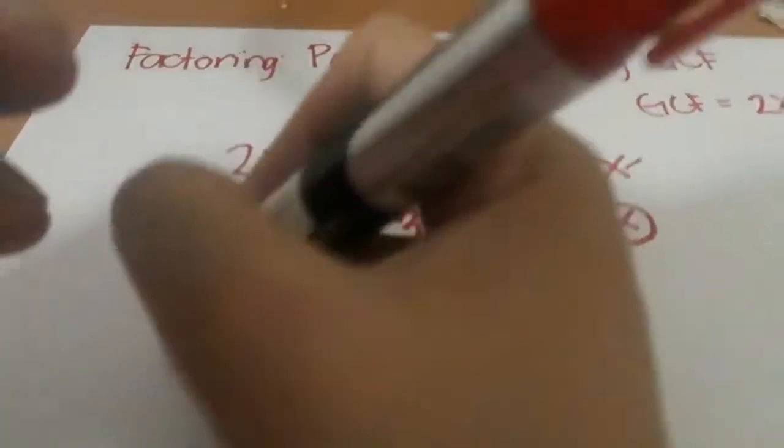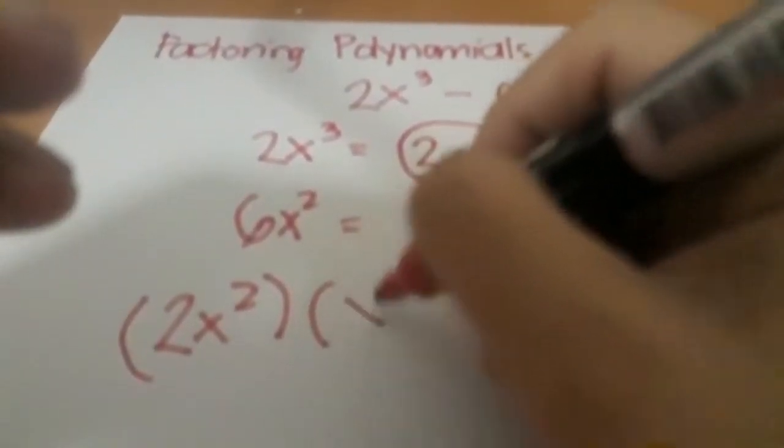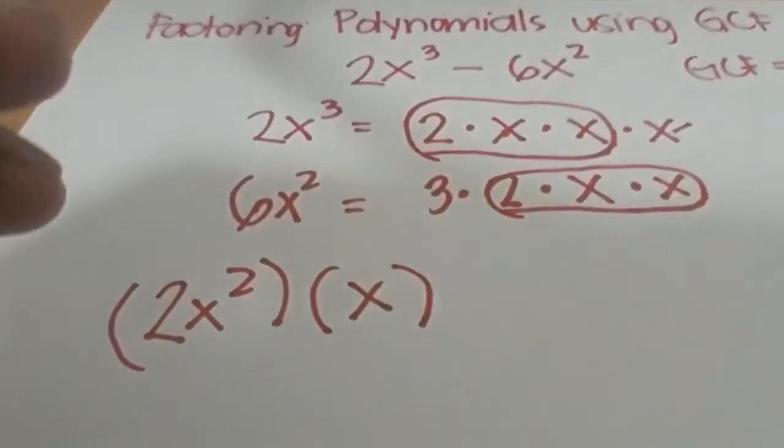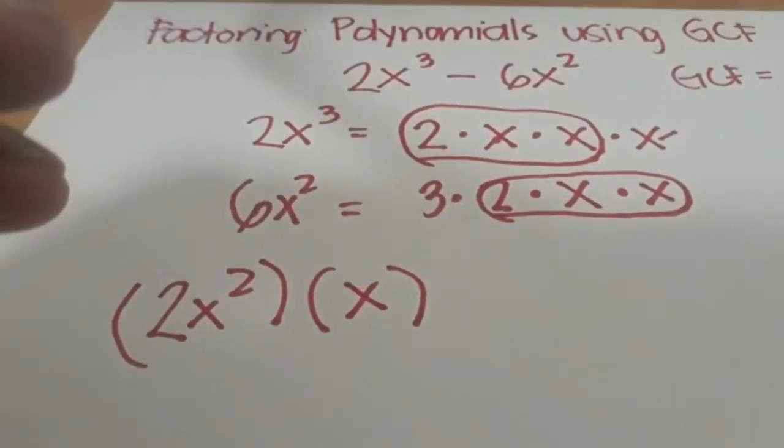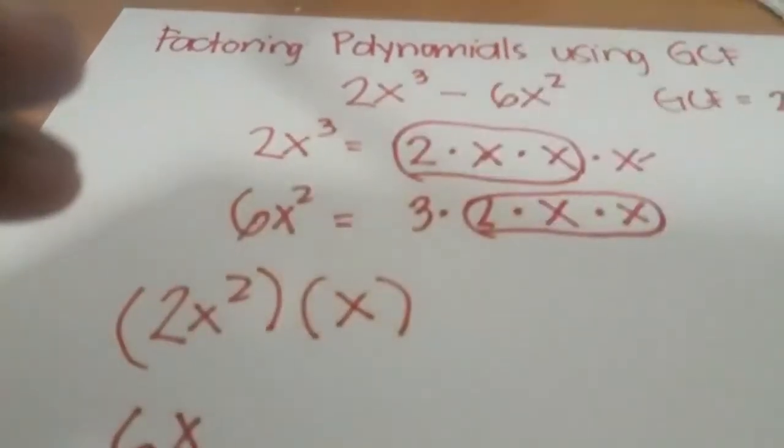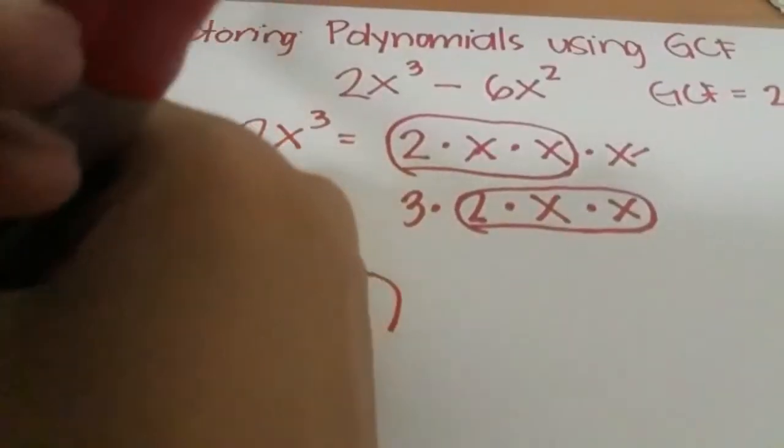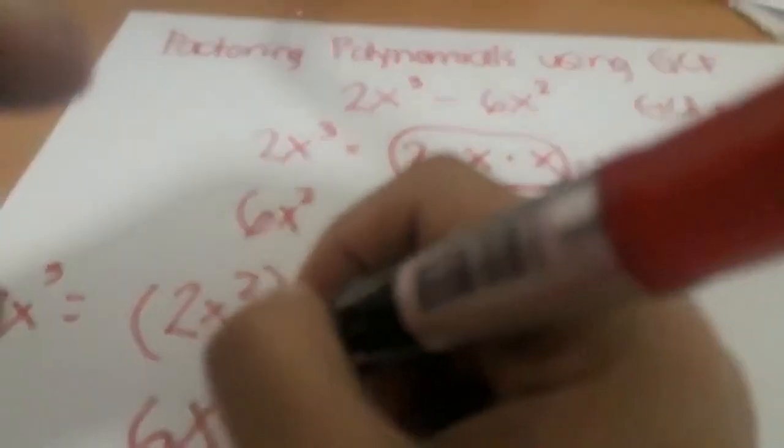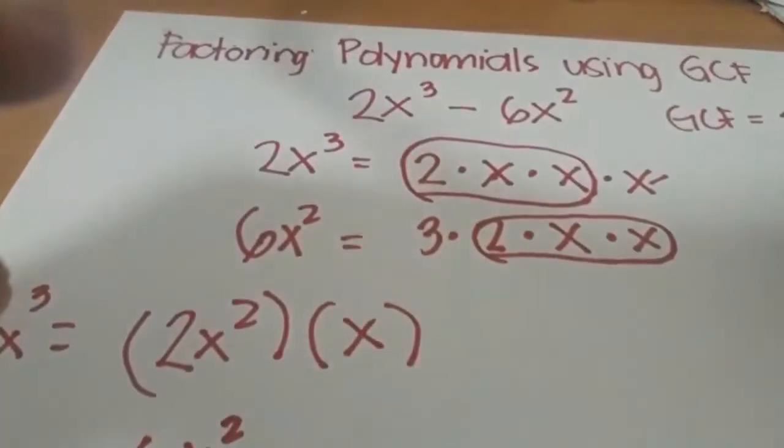This one, 2x² times the remaining factor of x. And then for 6x², our remaining factor is 3.